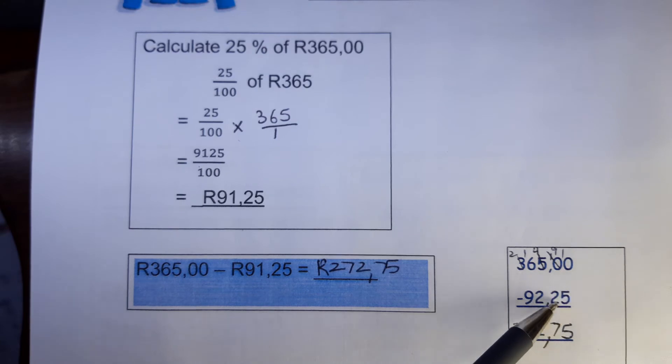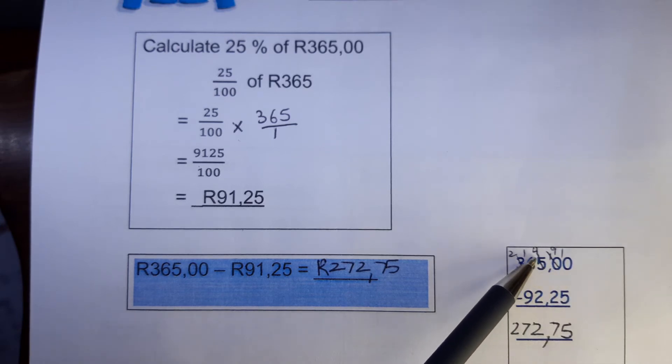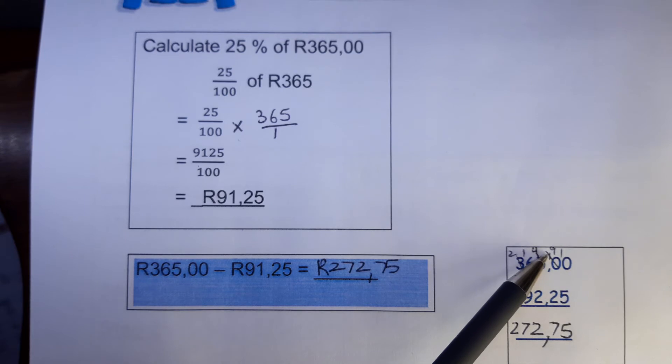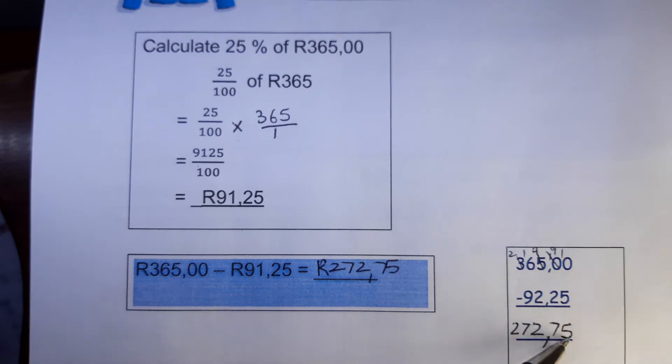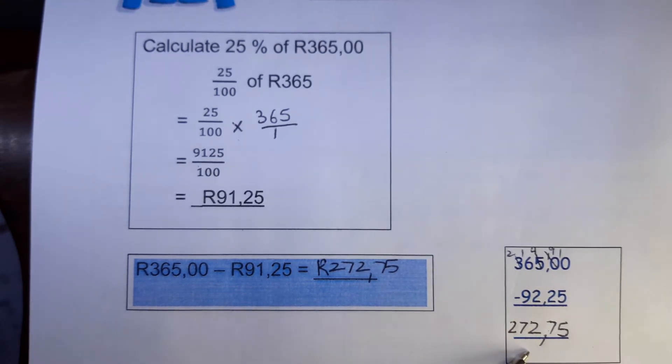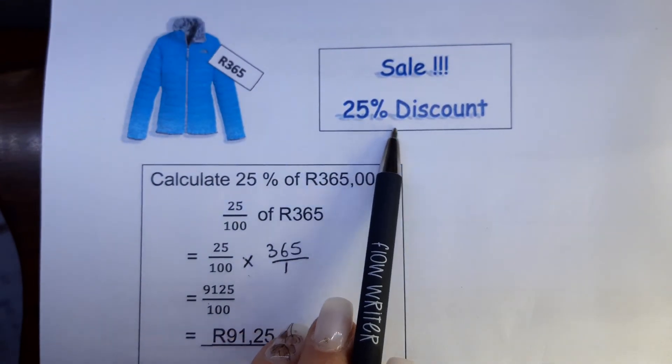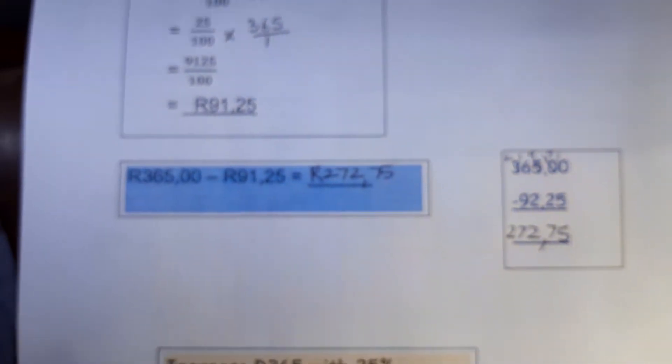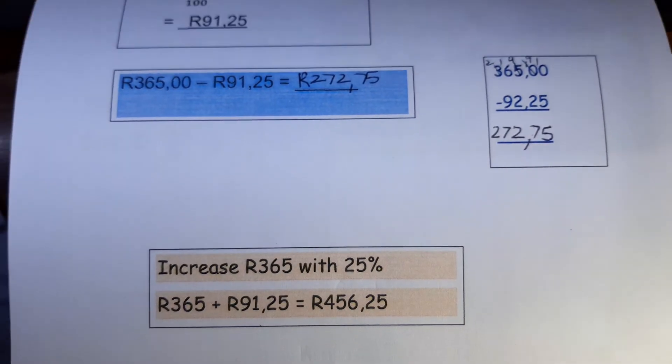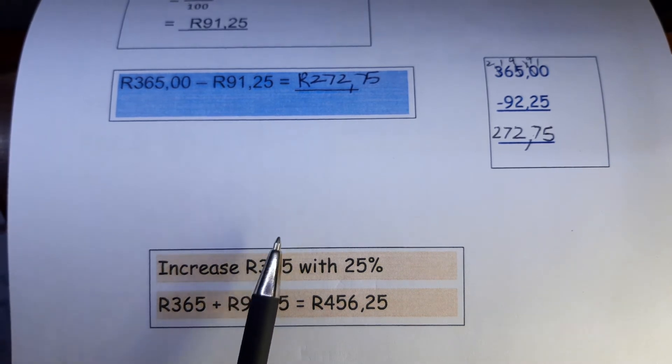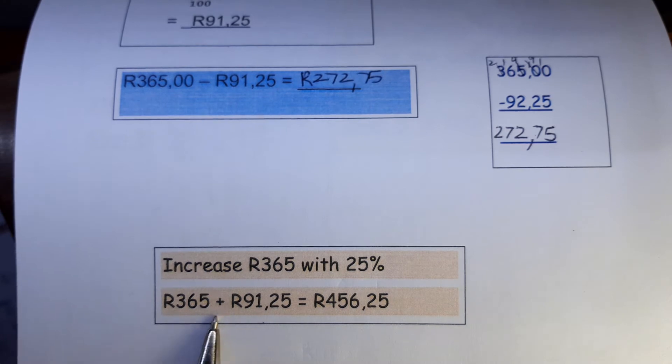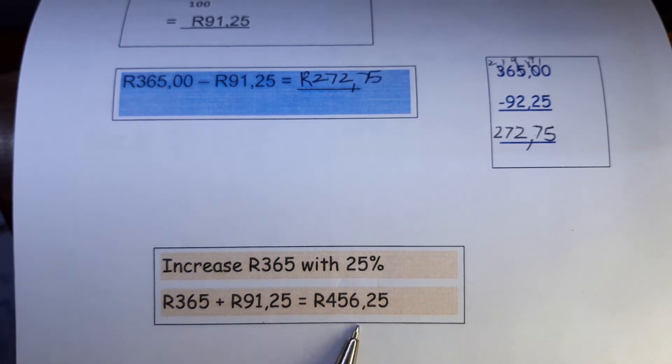So you take this answer and get this subtracted from 365, so that gives you 365 rand minus the 91 rand and 25 cents. Just be careful, you tend to write that answer, the 25 there. It's not right. 0 minus 5 is not enough. So you take one from the five units, that gives you 4, and then you carry one over, it's 10. Then you take one from there, it's 9, so it's 10 minus 5 is 5. 9 minus 2 is 7, so you continue, so it's 272 rand and 75 cents. That can also ask you, for example, increase, where this one was decrease with 25%, then you can have increase it with 25%. So you take your answer that you had there at the top and then you just add it to 365 rand and then you will get your answer.